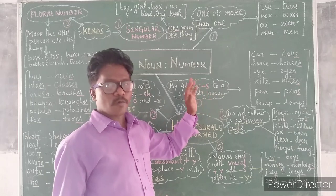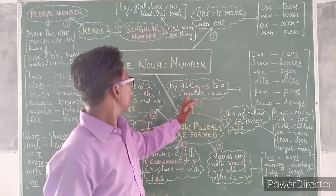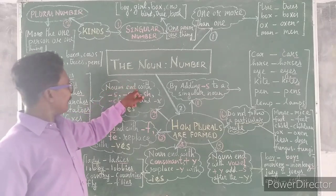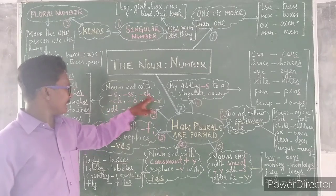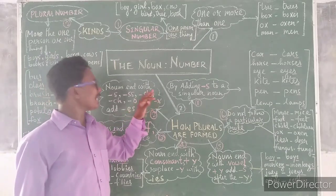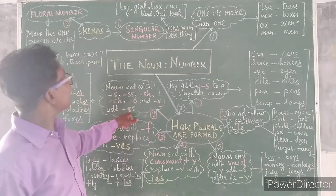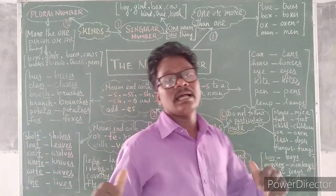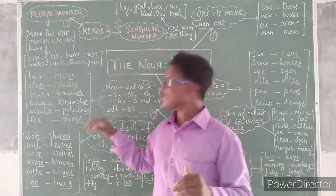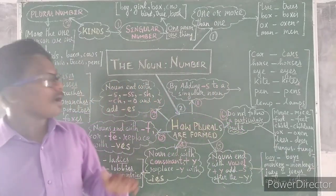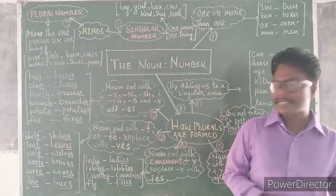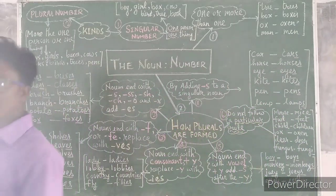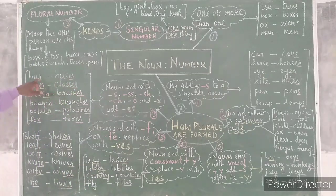The second way: when a noun ends with S, SS, SH, CH, O, or X, we add ES to form the plural noun. Examples: bus — buses, ending with S, we add ES. Class — classes, ending with SS. Brush — brushes, ending with SH. Branch — branches, ending with CH. Potato — potatoes, ending with O.